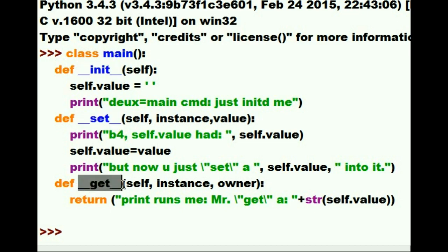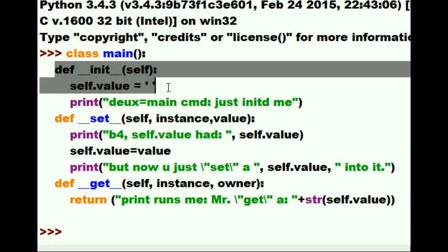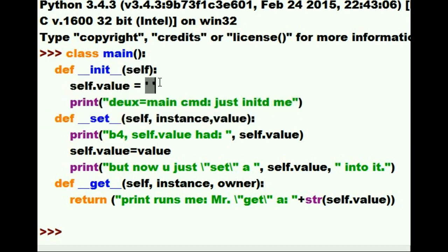And this is the double underscore get methods. When the init method gets initialized, it's going to do two things. It will assign a blank to self.value, an internal variable, and it will print out onto the screen this text.